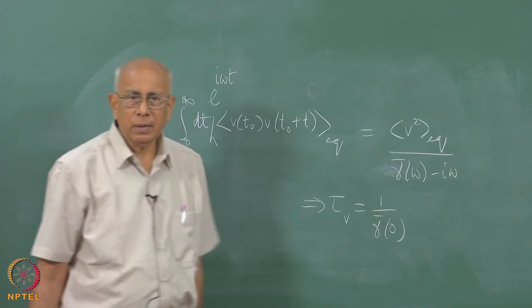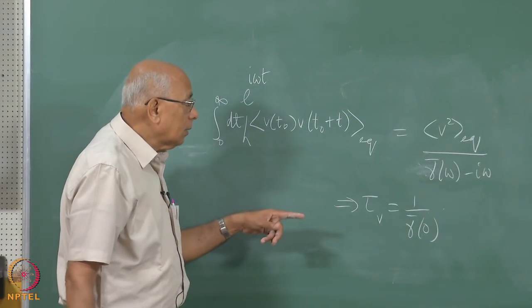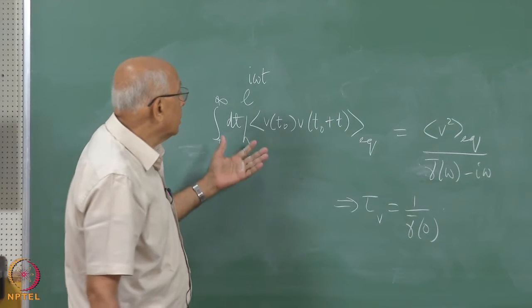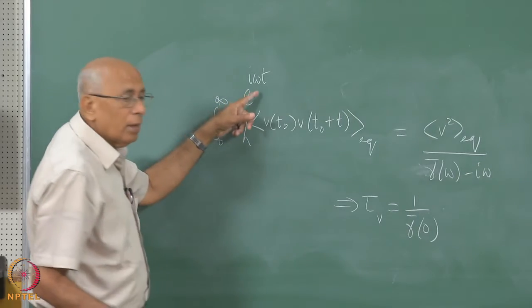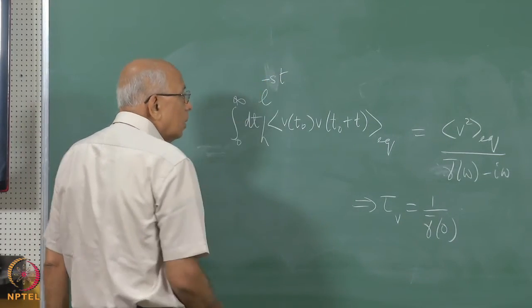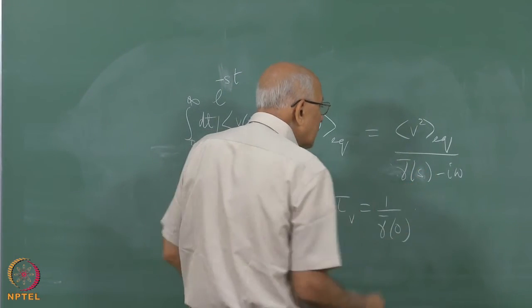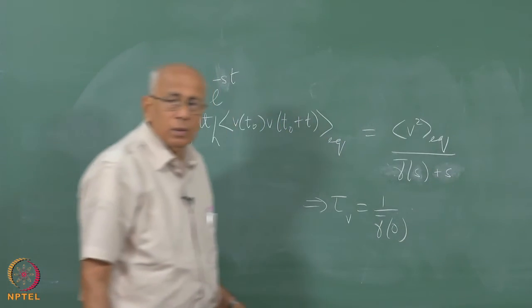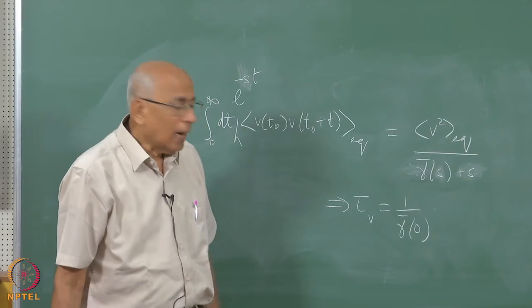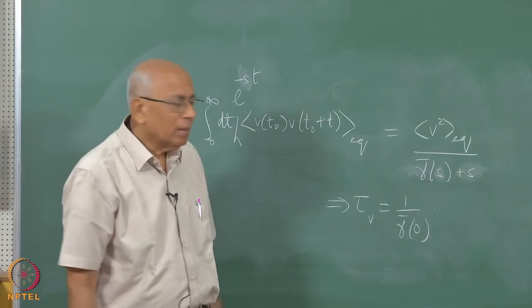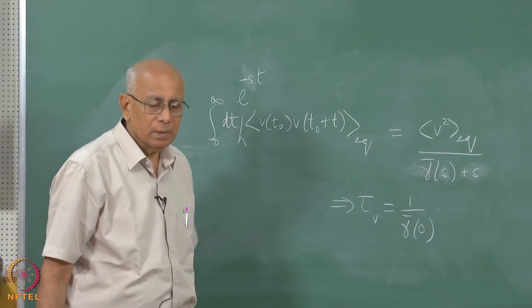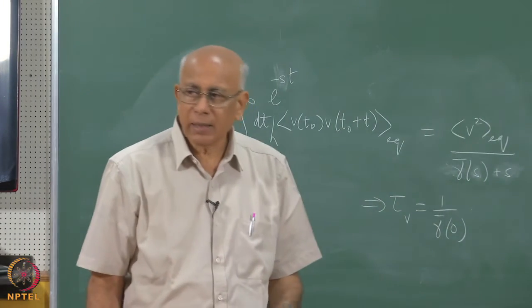In the generalized Langevin equation, the velocity correlation function is the inverse Laplace transform of k_BT/M divided by [gamma-bar(s) plus s], where gamma-bar(s) is the Laplace transform of gamma(t). If gamma(t) were a constant this would give a simple exponential; in general gamma-bar(s) is a complicated function of s and the inversion is not a rational function — the correlation can be very complicated indeed.